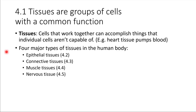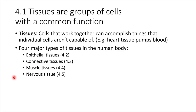There are four major different types of tissues in the human body. We'll go through them in order: first epithelial tissue, then connective tissue, muscle tissue, and nervous tissue. These are the four major tissue types and you'll need to know about each of them.